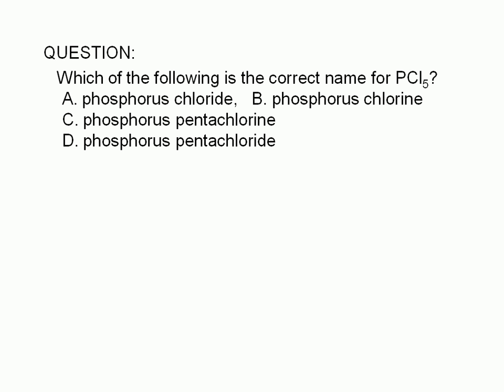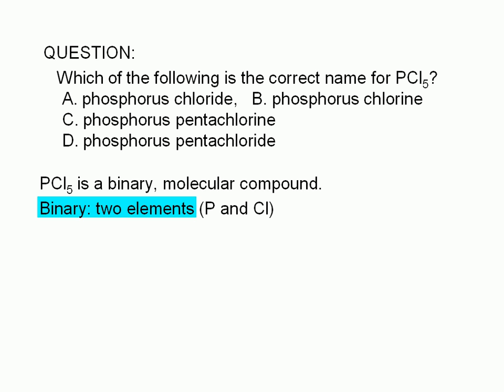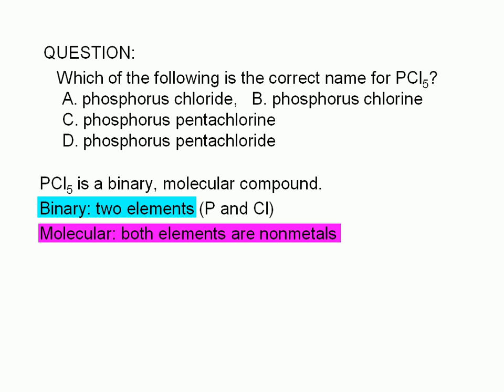PCl5 is a binary molecular compound. By binary, we mean that it is made up of only two elements, in this case, phosphorus and chlorine. It's a molecular compound because both elements are non-metals. If the first element were a metal, the compound would be classified as ionic.